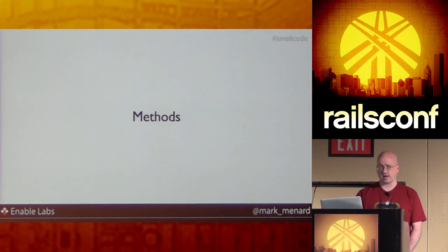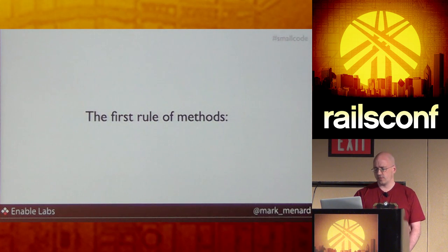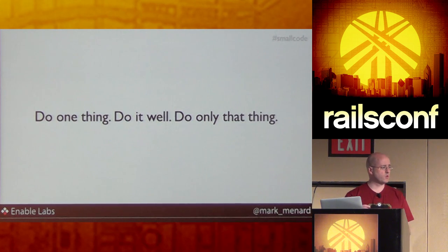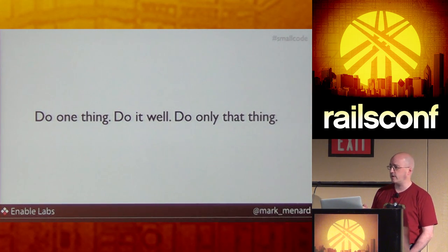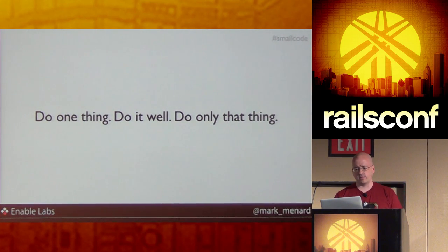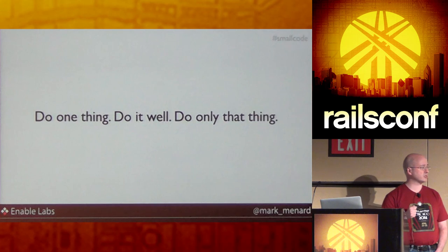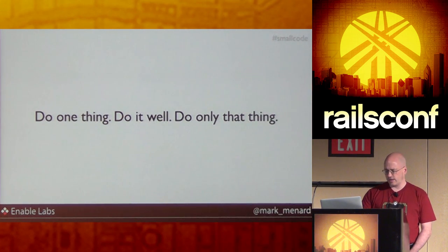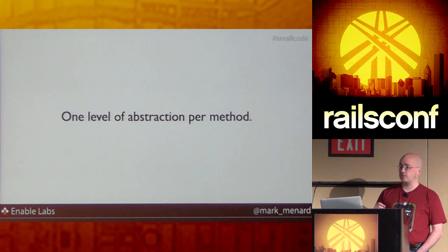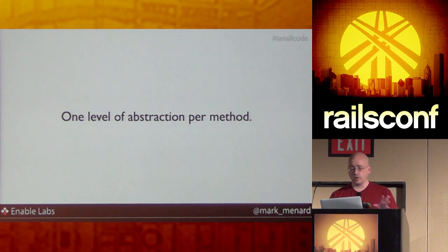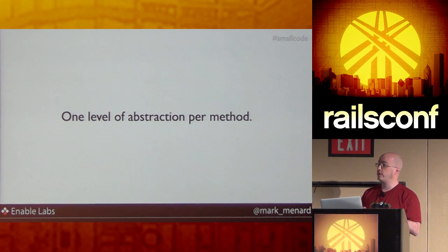Let's talk about methods, because we've got some big ones and we need to clean them up. I call it the first rule of methods: do one thing. Do it well. Do only one thing. This harkens back to the Unix philosophy of tools that you string together with standard in, standard out. But how do we determine if a method is actually only doing one thing? This is where your level of abstraction comes into play. You need to develop a feel for this over time — you want one level of abstraction per method.